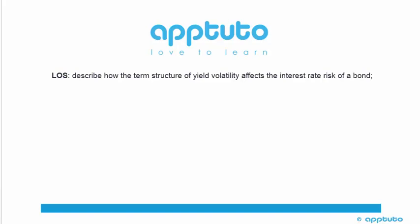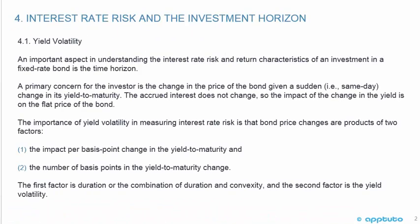This LOS is to describe how the term structure of yield volatility affects the interest rate risk of a bond. An important aspect in understanding the interest rate risk and return characteristics of an investment in a fixed rate bond is the time horizon.